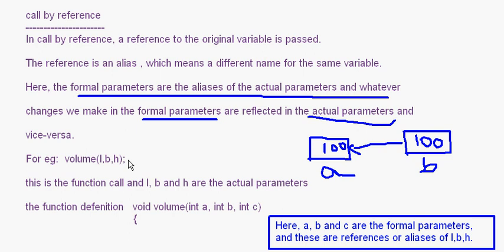For example, a function call 'volume(l, b, h)' where l, b, h are the actual parameters. In the function definition with 'int a, int b, int c' using call by reference, a, b, and c are actually aliases of l, b, and h. Whatever changes you make in a, b, c will be reflected back in l, b, h. In call by value a copy is made; in call by reference, no copy is made — it is just a reference to the actual variable.